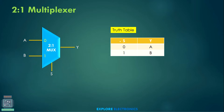You can see in the truth table: when S is equal to 0, Y is equal to A; when S is equal to 1, output Y is equal to B. By using this functionality, we can implement all logic gates using this 2-to-1 multiplexer.